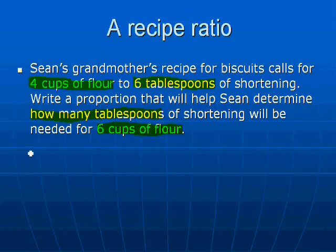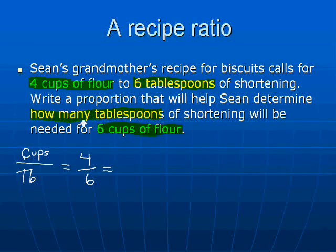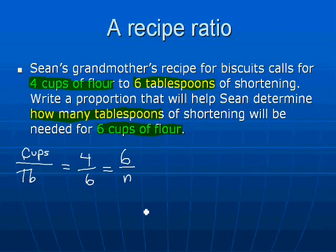Using cups over tablespoons as our unit structure, we have four cups of flour over six tablespoons is equal to — well, we need to determine how many tablespoons, so we don't know what goes on the bottom, and we'll call that N. We do know that we have six cups of flour. So our proportion is four over six equals six over N. We can cross multiply — I'm going to do this the long way, but if you go back and look at the previous tutorial, it'll show you some shorter ways to do this.